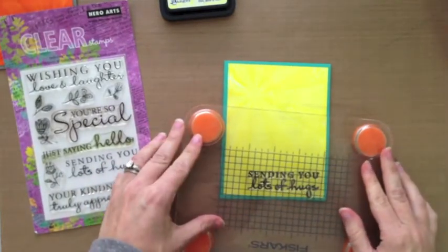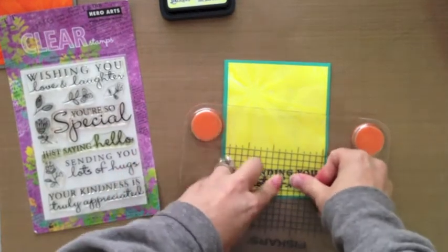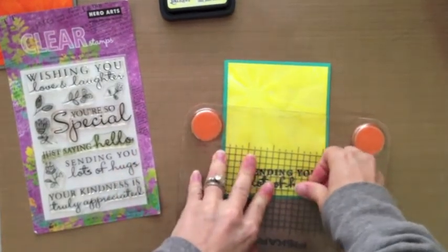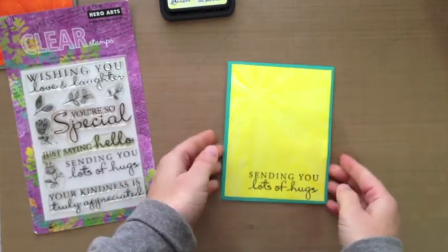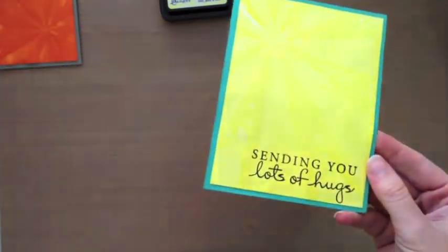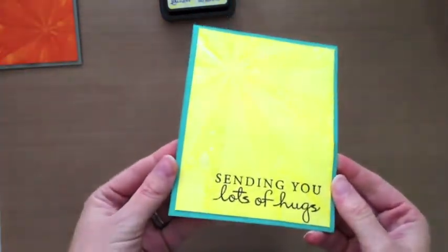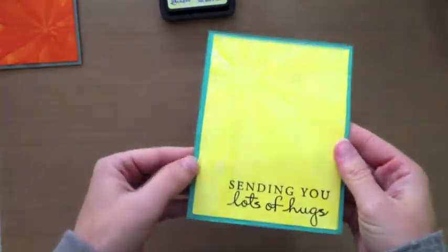With the Fiskars stamp press you can pretty much line it up however you want, before pressing down, before locking in what you're going to do. And just like that you have a very simple card with a really fun background that those that aren't in the industry will think, gosh, how did they do that?